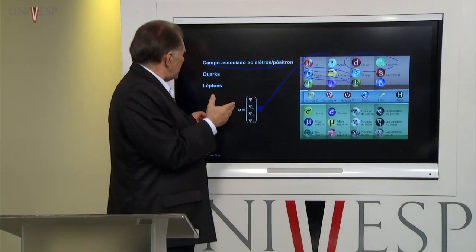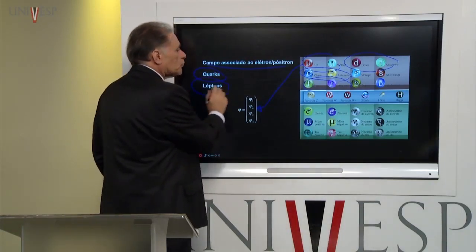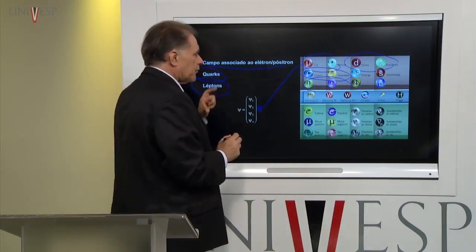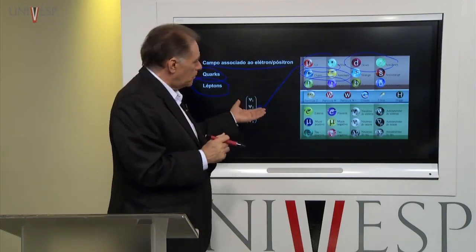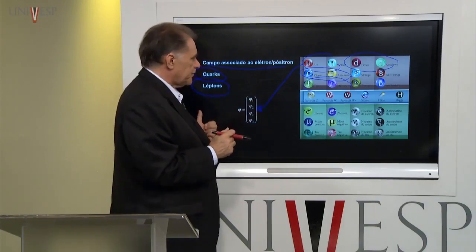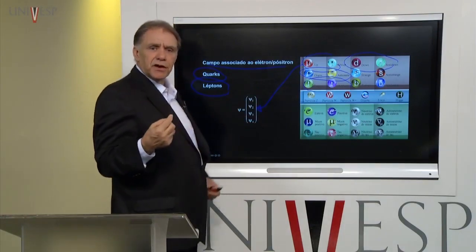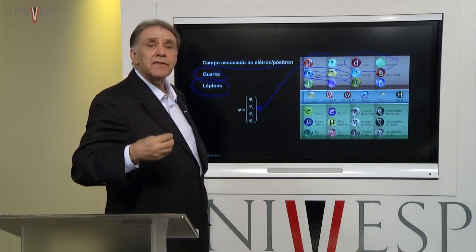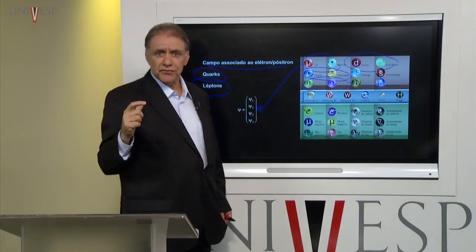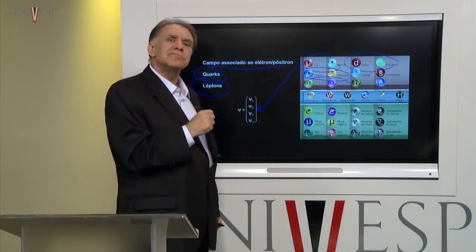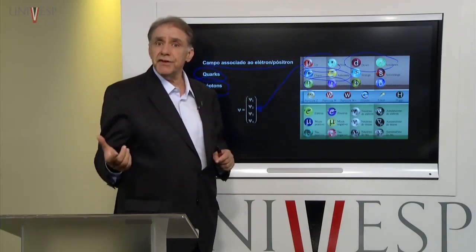Ele é fundamental para descrever quarks e para descrever todos os tipos de léptons. O elétron e o pósitron são léptons — partículas mais leves. O múon, o tau negativo, o tau positivo e os neutrinos. O campo de Dirac é utilizado para descrever a maioria das partículas, porque temos 48 partículas que podem ser descritas por esse campo — para cada par, associa-se um campo de Dirac diferente.